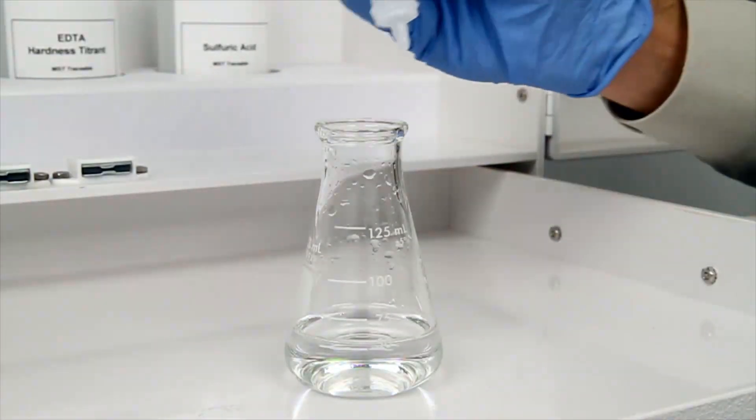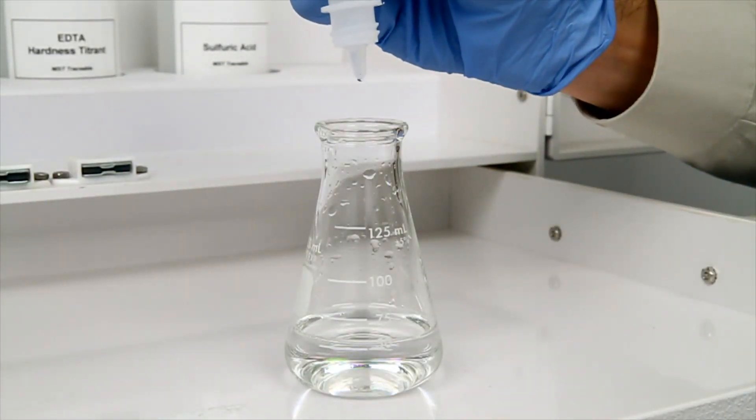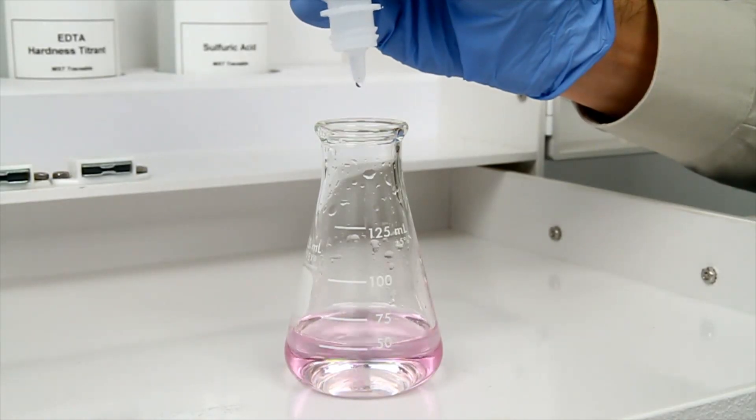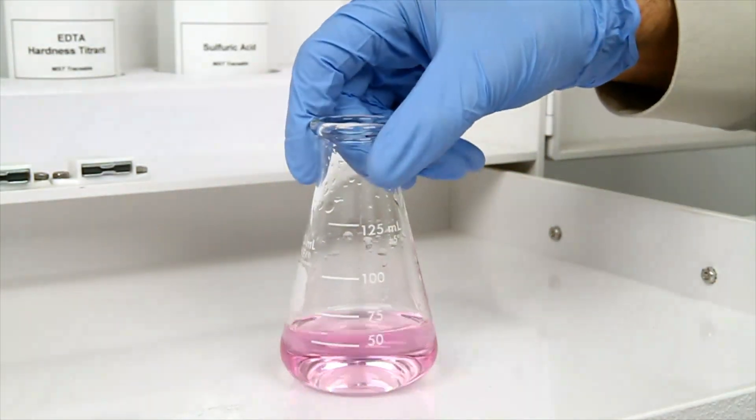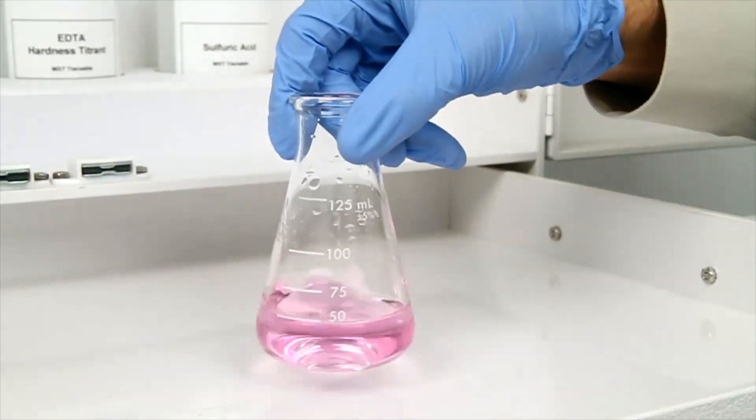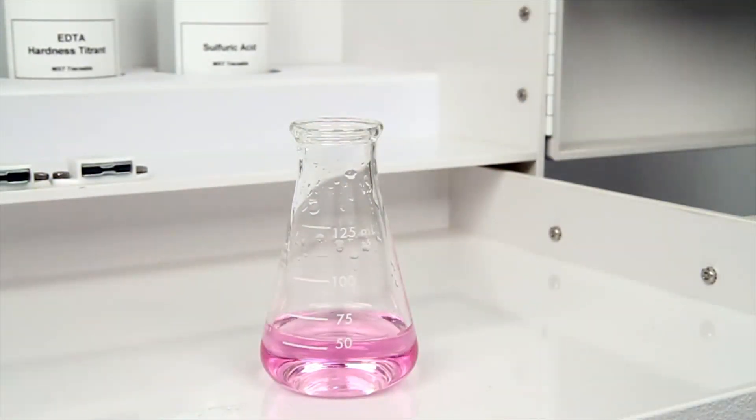The next step is to add five drops of phenolphthalein indicator. After the addition of the reagent, swirl to mix. The solution should turn red. If the solution remains colorless, the P alkalinity is zero.